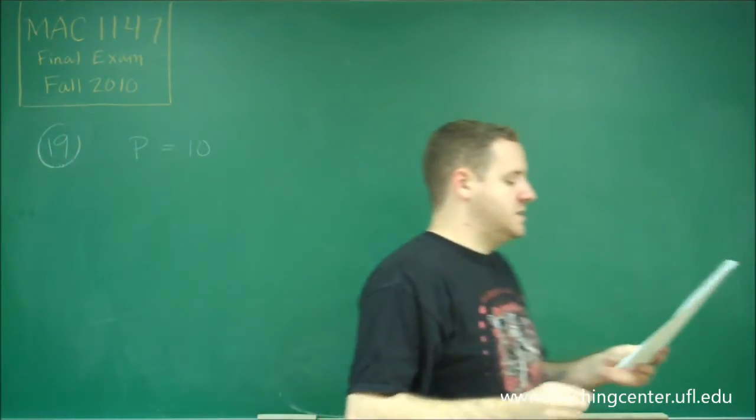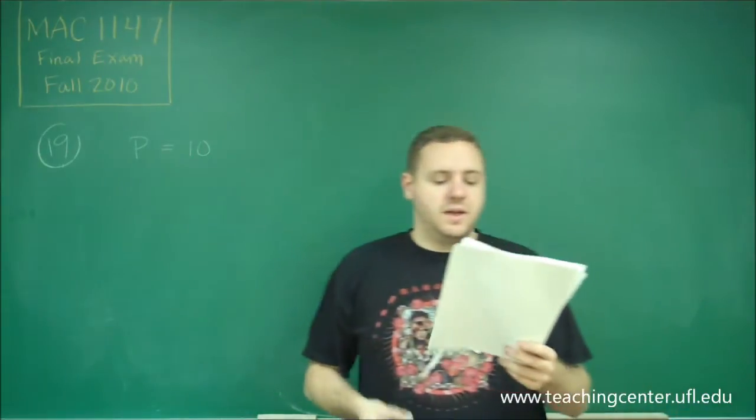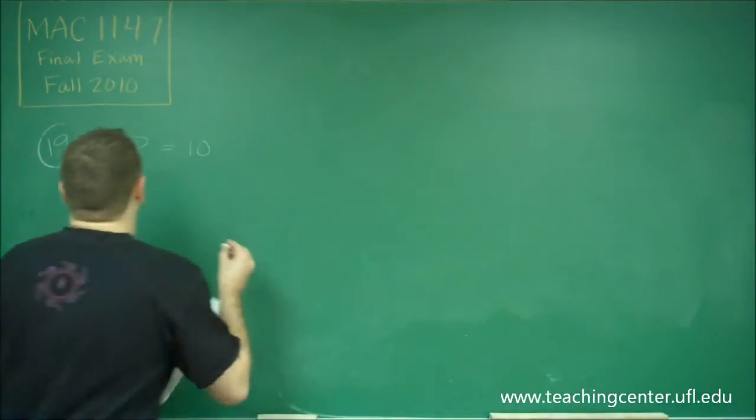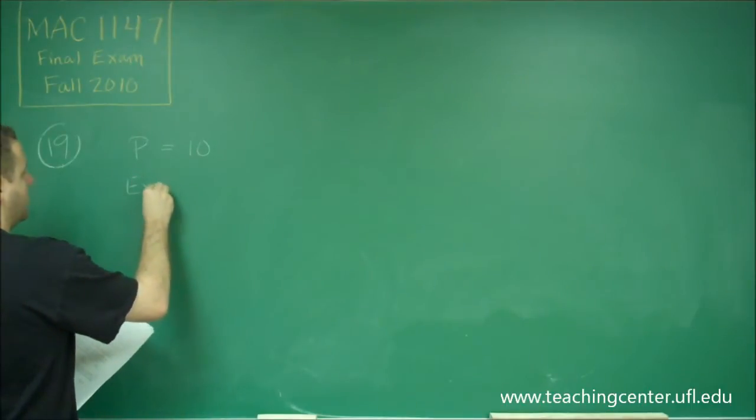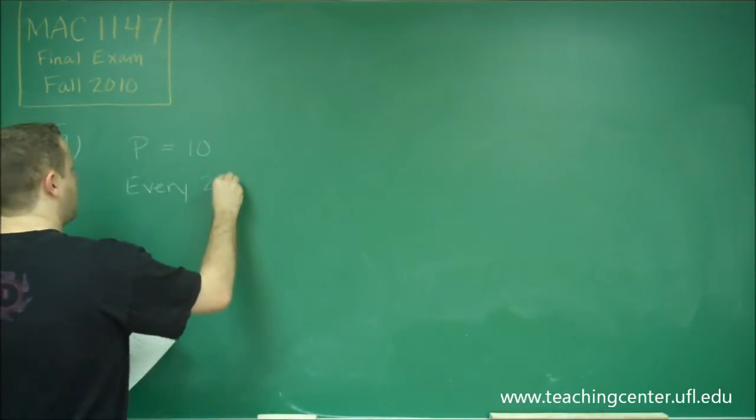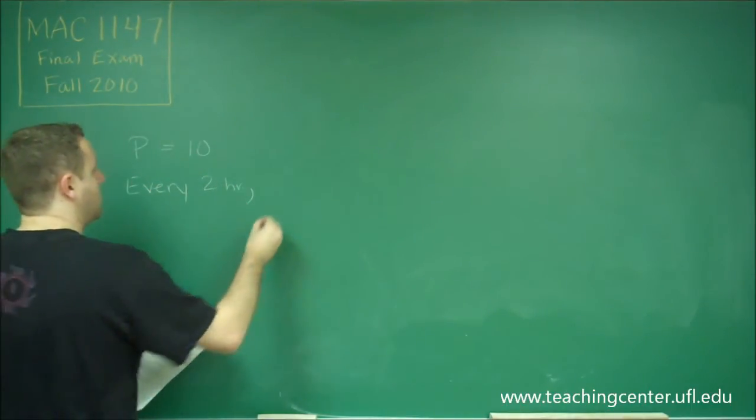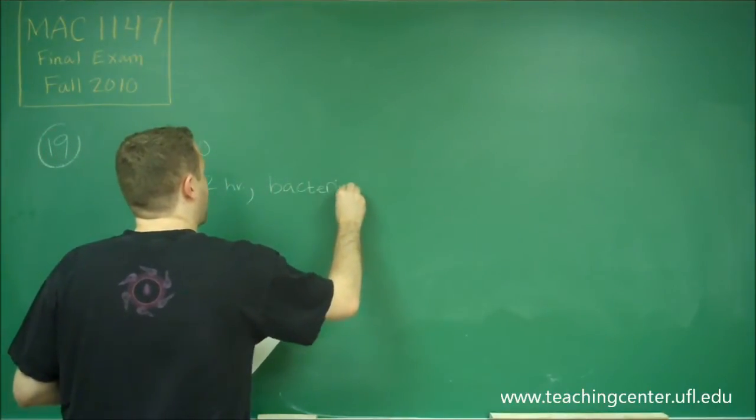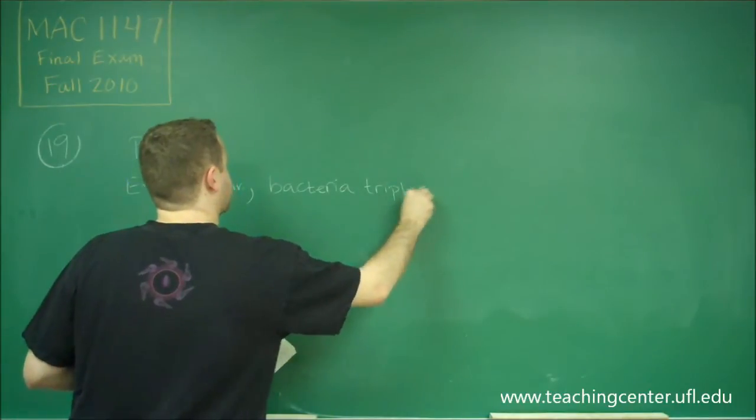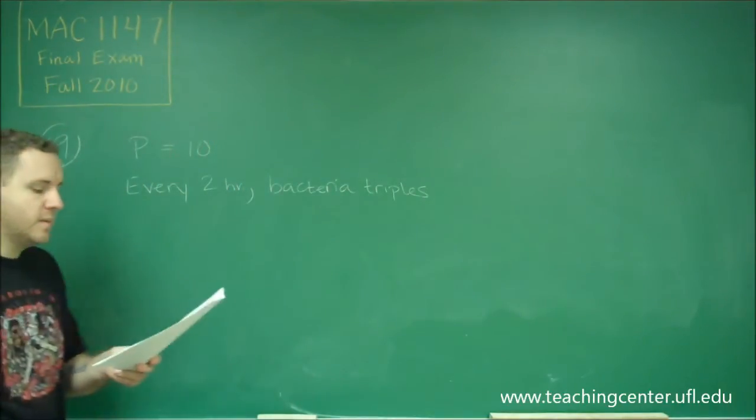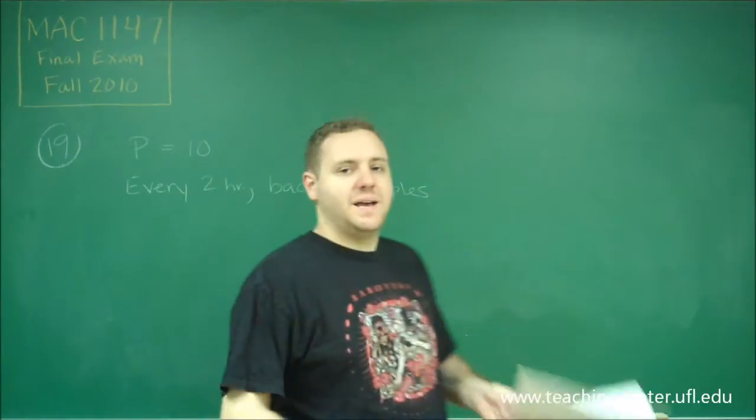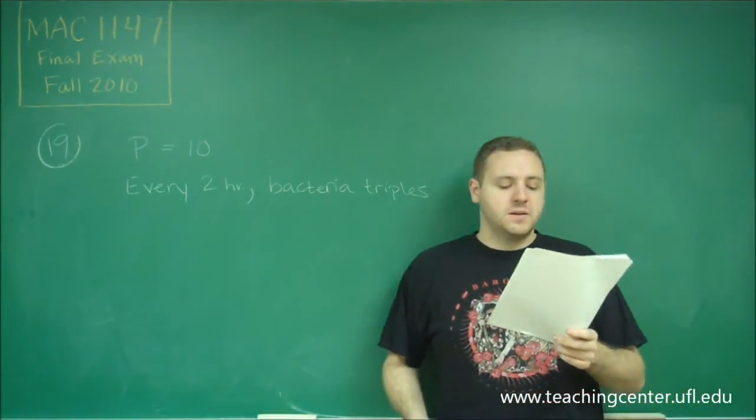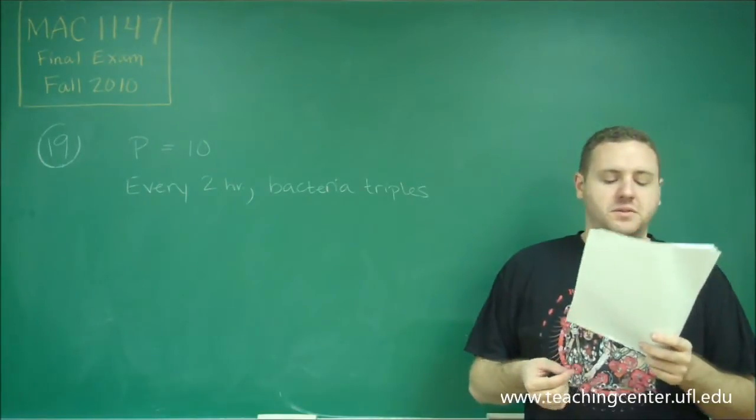And the number of bacteria is 30 two hours later, so that actually tells us a couple of different things. We know that every two hours, the bacteria triples. So after two hours, 10 turned into 30, so we tripled our number. So the question is, find the time when the number of bacteria reaches 100.